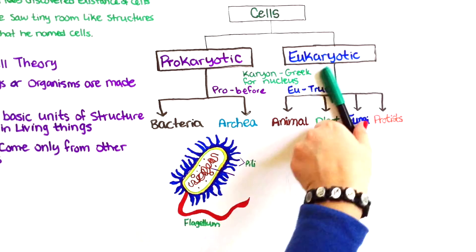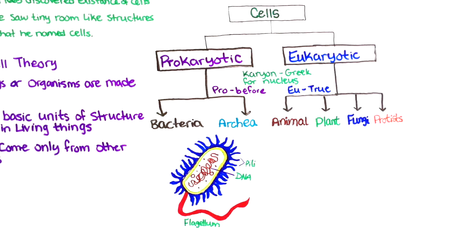The DNA found in all living things, which acts as a kind of recipe book telling your body how to build itself, is made up of the same chemicals throughout nature. That's because we all started off from the same point and have evolved into the wealth of species found on Earth today.